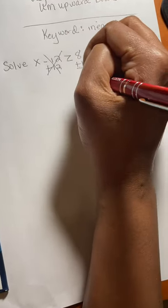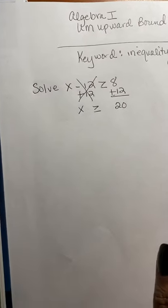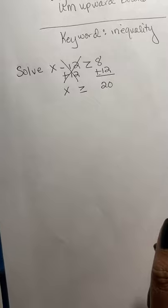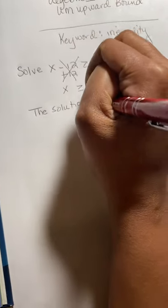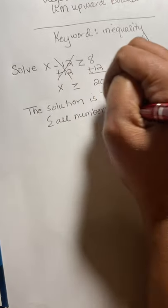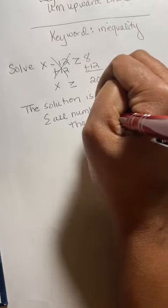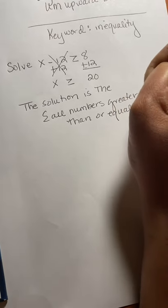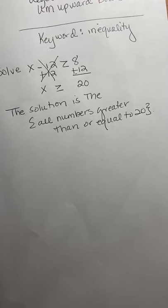8 plus 12 is 20. I want to bring down the x and I'm going to bring down the greater than or equal to sign. So when we're looking at the solution set, I want you to know that the solution of this problem in words is the set of all numbers greater than or equal to 20. So that's how you would say it in words.